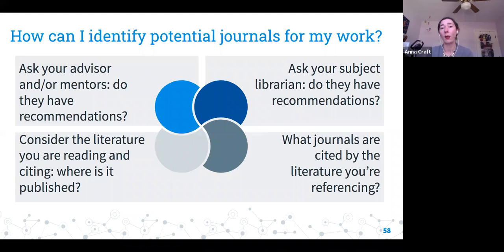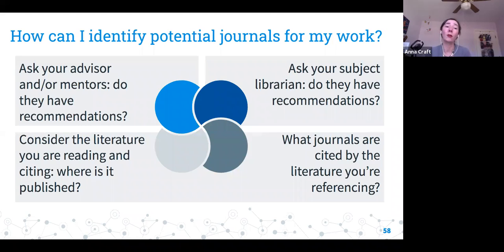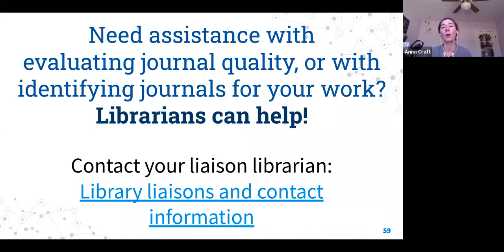Some quick thoughts on identifying potential journals: your advisors or mentors may have recommendations. Think about the literature you are reading and citing and where it is published. Your subject librarian may have recommendations. Also look at what journals are cited by the literature you are referencing — follow that chain of citations. If you need assistance evaluating journal quality or identifying journals, contact your librarian. We are here to help.